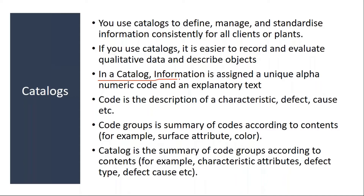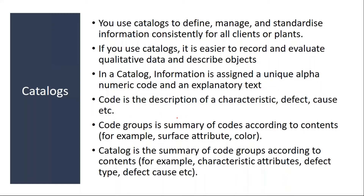In a catalog, information is assigned a unique alphanumeric code and an explanatory text. I will show this in the system. Basically, this code is a description of a characteristic, defect cause, et cetera. I will tell you the scenario.